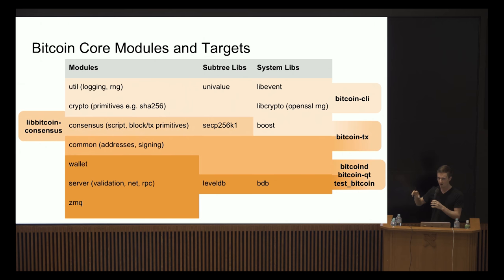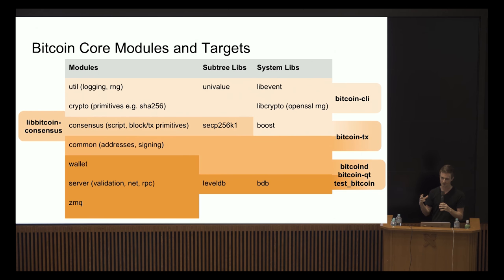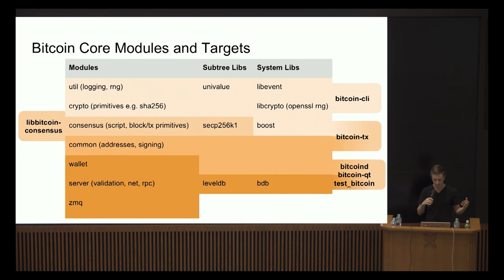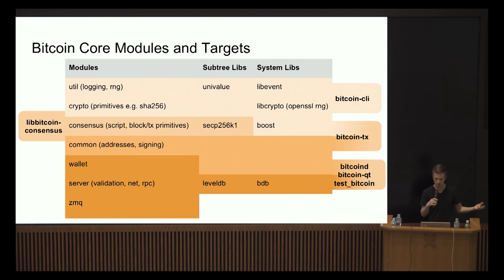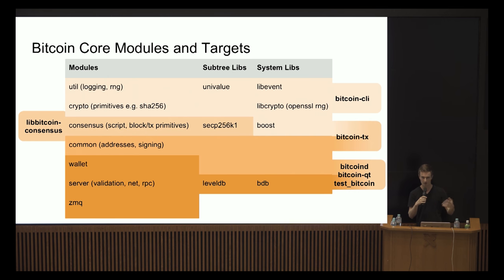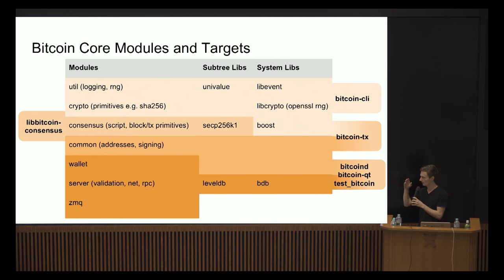Another build target is libbitcoin-consensus, which is a long-term project designed to provide a library that takes care of all the consensus rules. For example, you could have your node, and if consensus changes — maybe there's a soft fork or a hard fork — you only update that library and you're running the latest consensus without having to upgrade your whole company infrastructure or your RPC interface.